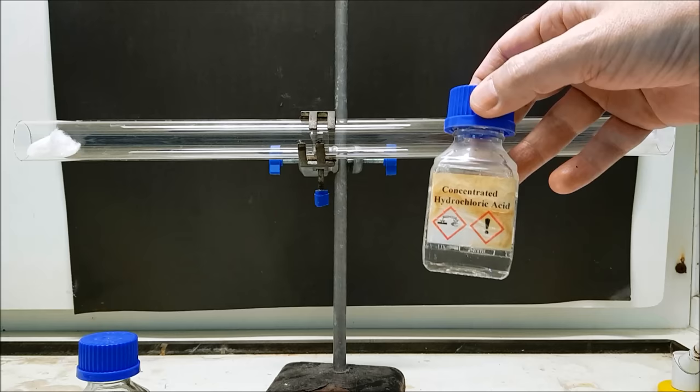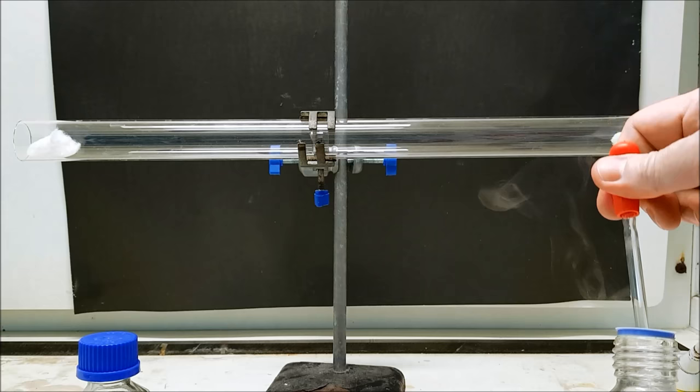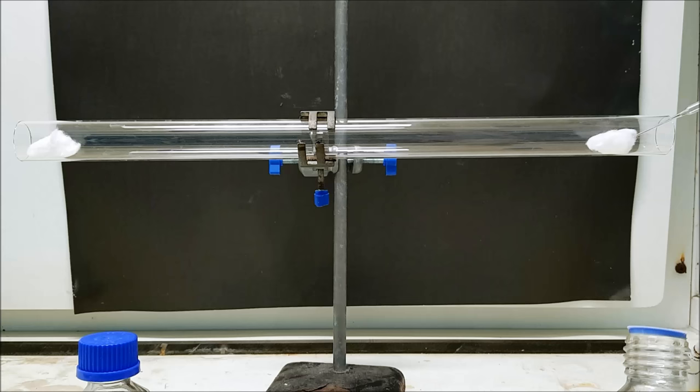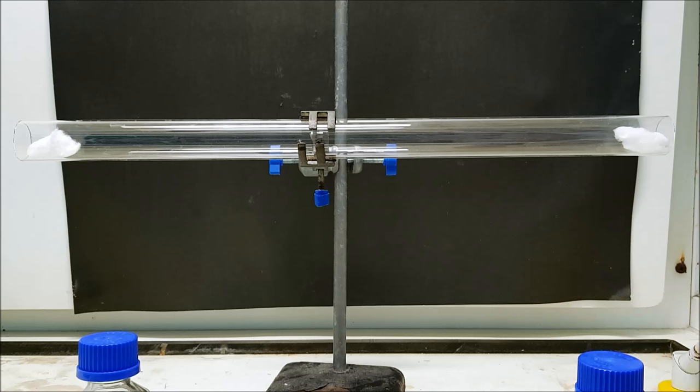Ammonia and hydrogen chloride diffusion experiment. Here's some concentrated HCl. If we place a few milliliters onto the cotton wool there on the right hand side, we can close off with a bung.